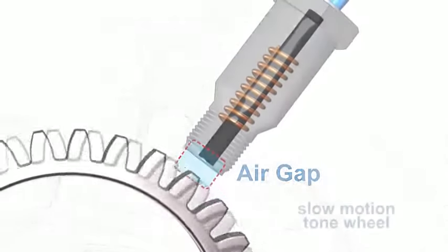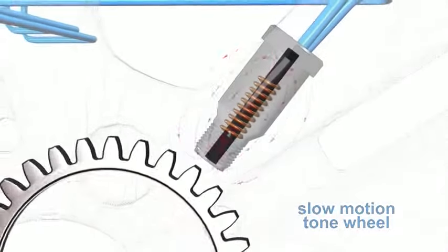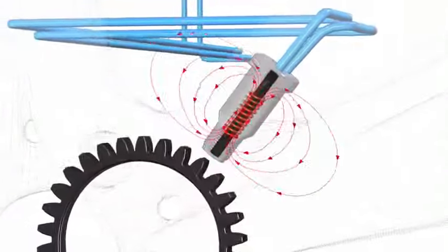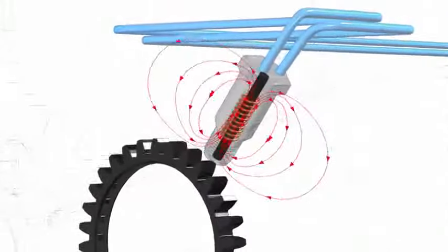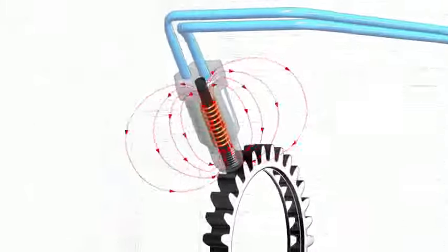As the tone wheel rotates, the air gap between the pole piece and the teeth change. As this occurs, the magnetic field or flux from the permanent magnet within the sensor will expand and contract in time with the approaching and receding tooth.